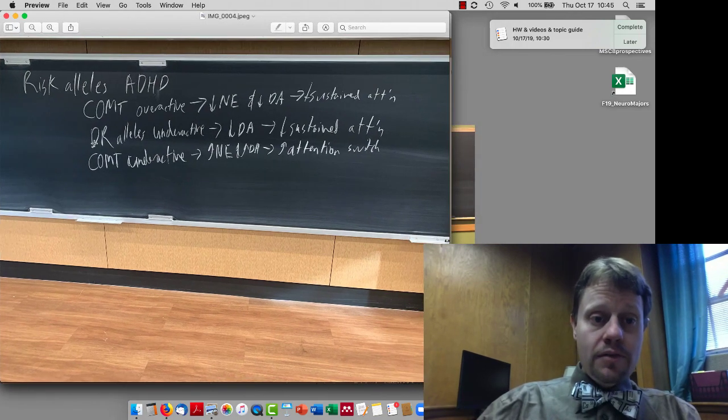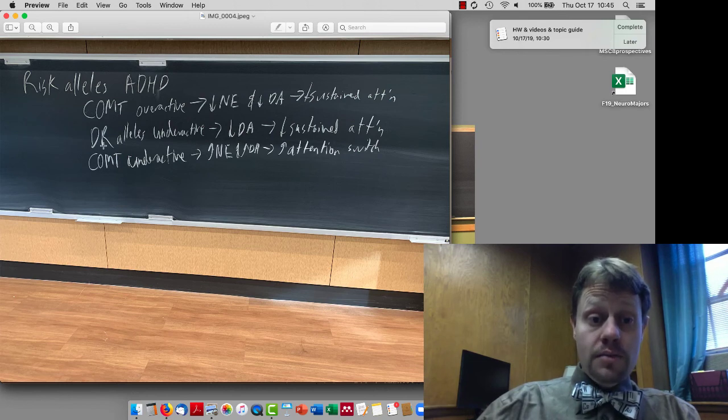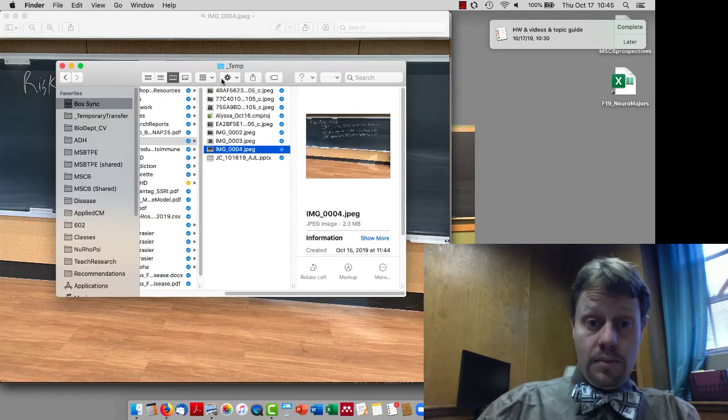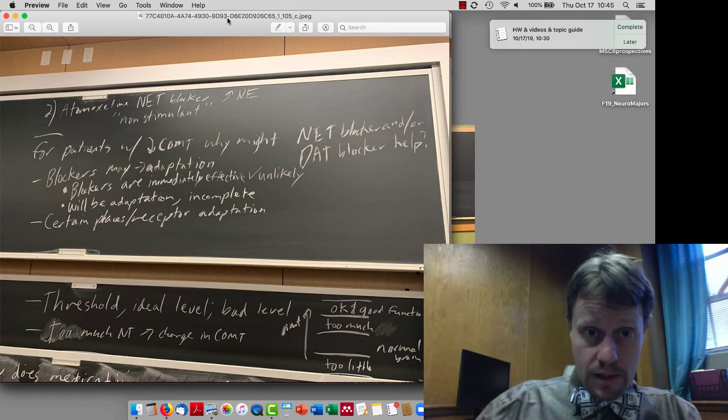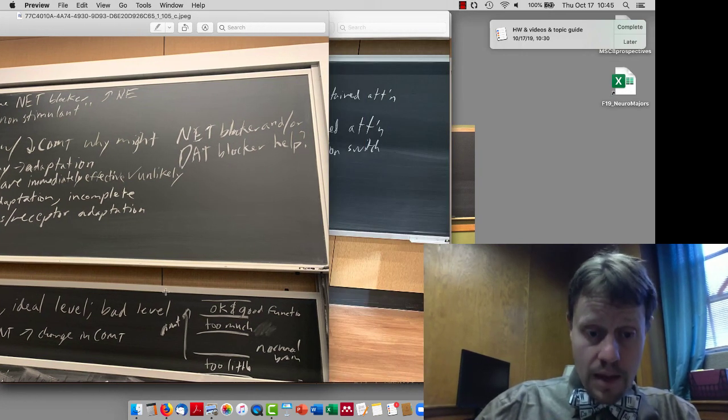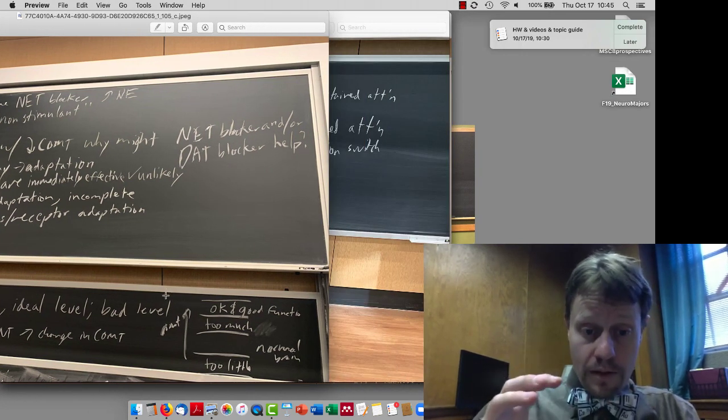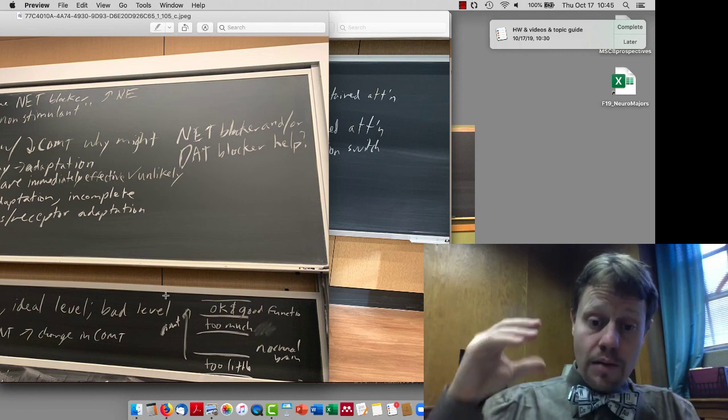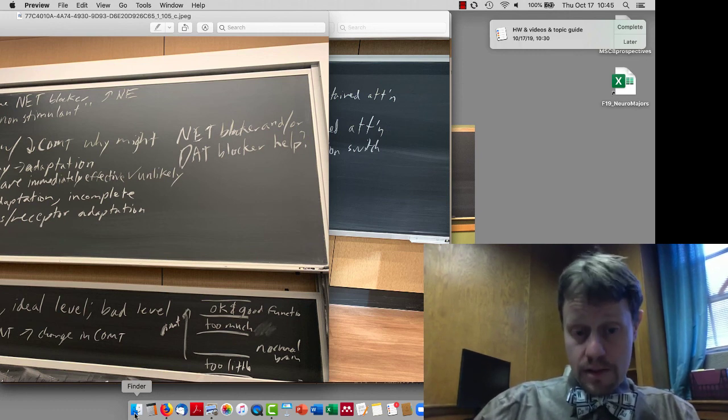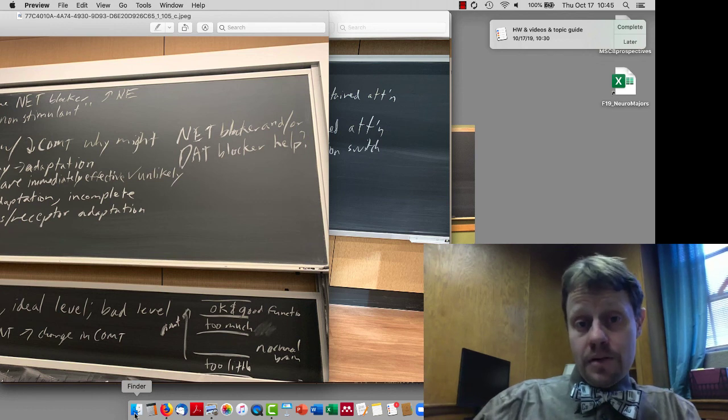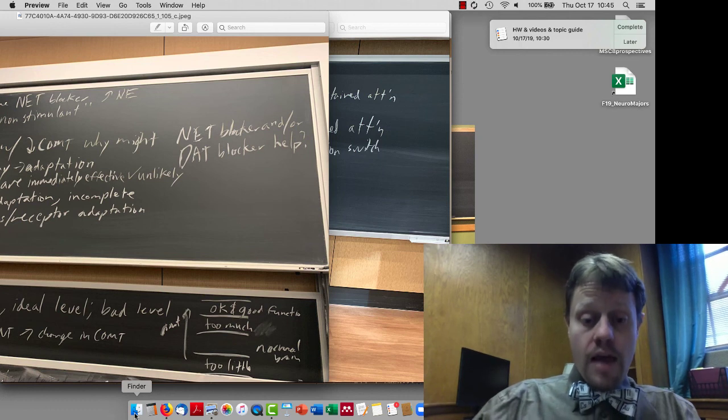We talked about specific risk alleles for ADHD. Interestingly, either overactive or underactive COMT, as well as underactive dopamine receptors. In terms of the overactive or underactive COMT, there's this one idea that maybe there's normal amounts of dopamine, and then a little bit of an increase leads to problems, but more of an increase actually can rectify those problems. That is an interesting hypothesis that has some experimental data behind it, but that data has been also very controversial. And there's not a clear consensus about whether this is really the case or not.